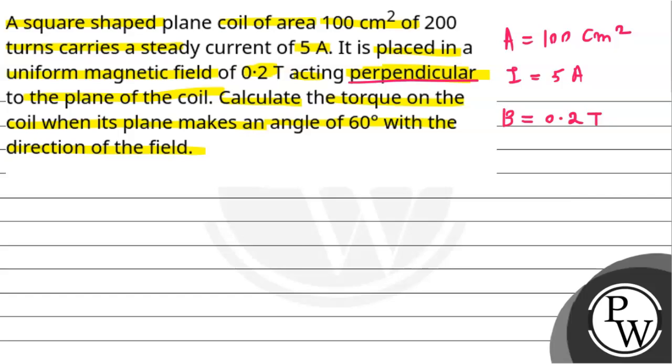So we need to calculate the torque for this coil. When the plane is making 60 degree angle with direction of the field. That means this way the plane will be and in this direction magnetic field will be. So the angle between them will be 60 degrees in this way.